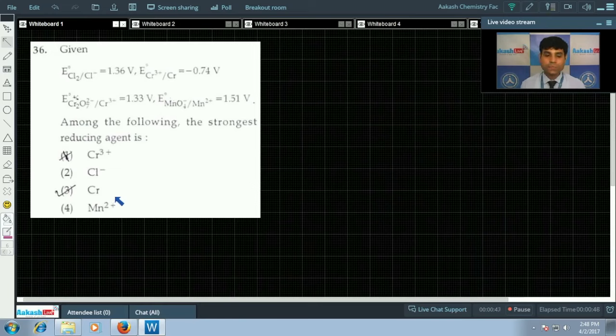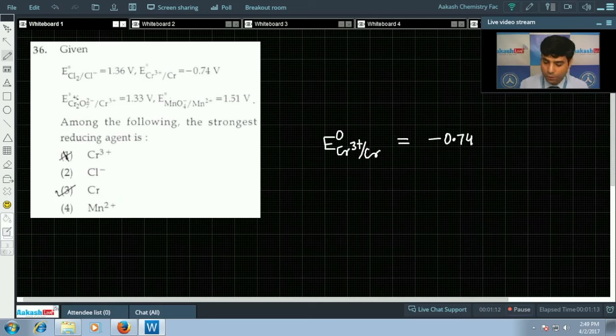As we know, more the reduction potential, more will be the oxidizing power. Here it is given strongest reducing agent, so the reduction potential should be minimum. Minimum reduction potential is for chromium. E0 of Cr3+/Cr equals minus 0.74 volt, so it has minimum reduction potential.